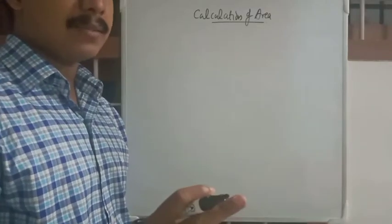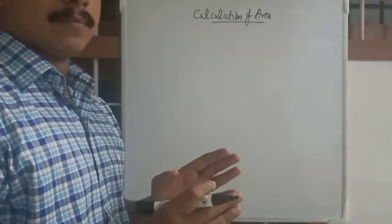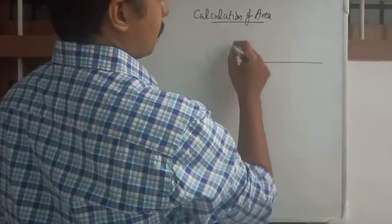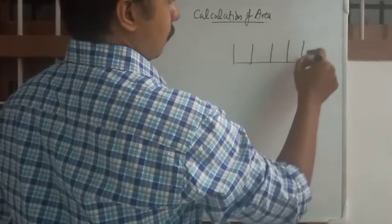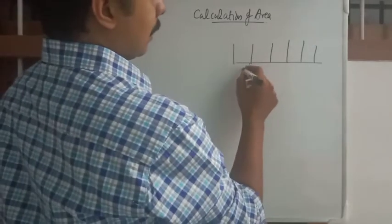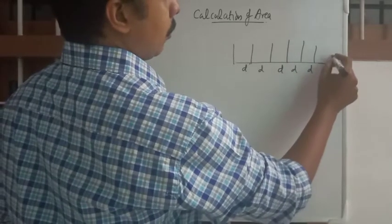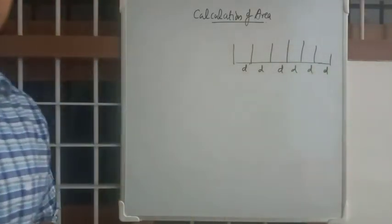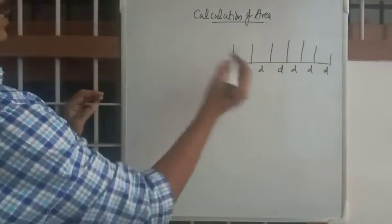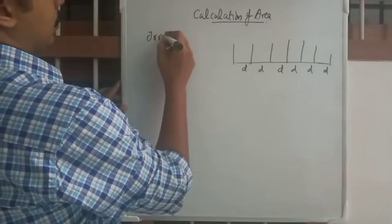Welcome back. In the last video we discussed area calculation with a baseline and offsets, and there was one more constraint — the intervals were regular, meaning D was equal all along. Today we are discussing area with a baseline and offsets but with irregular intervals.